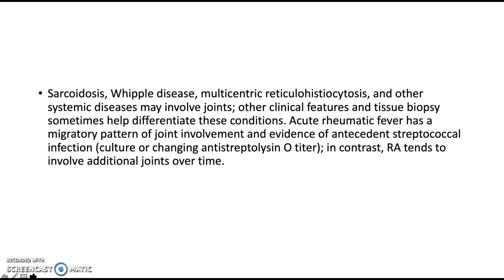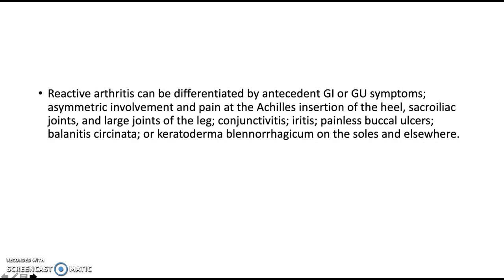Acute rheumatic fever has a migratory pattern of joint involvement and evidence of antecedent streptococcal infection from culture or change in anti-streptolysin O titers, in contrast to rheumatoid arthritis which tends to involve additional joints over time. Reactive arthritis can be differentiated by antecedent gastrointestinal or genitourinary symptoms, asymmetric involvement, and pain at the Achilles insertion, sacroiliac joints, and large joints of the leg, as well as conjunctivitis, uveitis, painless buccal ulcers, balanitis, or keratoderma blennorrhagicum on the soles and elsewhere.